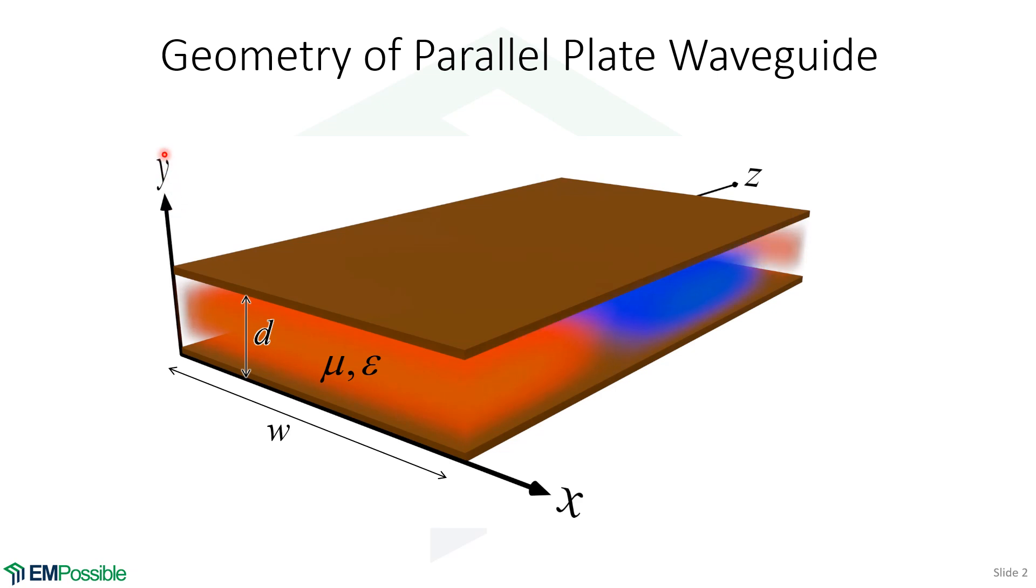We can do that without loss of generality, which places the cross section of the guide in the xy plane. And usually it's the y direction that is the sort of inhomogeneous or non-uniform direction. That's the direction of the plates, that's the direction of the confinement. And so x is the infinite direction here until except at the very end when we do actually analyze a parallel plate of finite width.